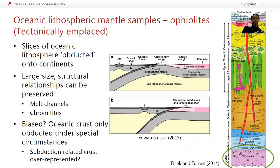The potential problem with ophiolites is that they might be biased because it's actually quite difficult to obduct oceanic crust — the vast majority just ends up getting subducted. There's a possibility that subduction-related crust is over-represented. The easiest way to envisage an ophiolite being obducted is where you have oceanic-oceanic subduction, and eventually the overriding plate catches up with the continent and some of the crust and upper oceanic lithospheric mantle gets scraped off onto the continent.